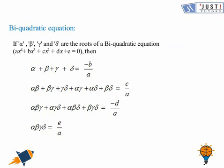Now we are moving ahead to the biquadratic equation. If alpha, beta, gamma and delta are the roots of the biquadratic equation ax to the power four plus bx cubed plus cx squared plus dx plus e equals zero, then: alpha plus beta plus gamma plus delta equals minus b by a; alpha beta plus beta gamma plus gamma delta plus alpha gamma plus alpha delta plus beta delta equals c by a; alpha beta gamma plus alpha gamma delta plus alpha beta delta plus beta gamma delta equals minus d by a; and alpha beta gamma delta equals e by a. Here b is the coefficient of x cubed, a is the coefficient of x to the power 4, c is the coefficient of x squared, d is the coefficient of x, and e is the constant.